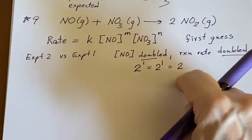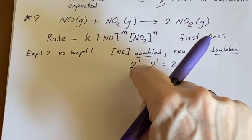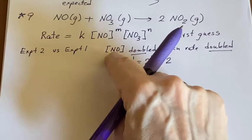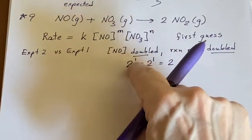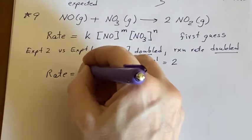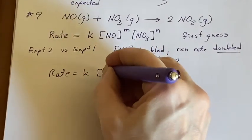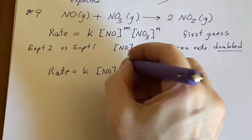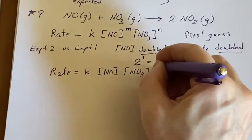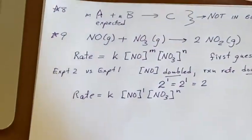That means whatever the coefficient was that I put as an exponent on nitrogen monoxide is one. I now say the rate is K and NO to the first power. This one I don't know yet, this is still up in the air. Well, I have another experiment.